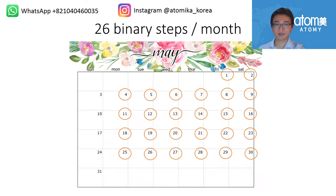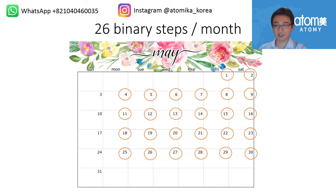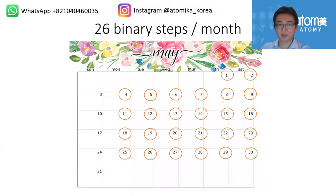You can match up to 26 binary steps per month on average — essentially one per day, except Sunday. Sunday is not counted as a separate day; purchases made on Sunday roll into Saturday or Monday. Also, when you make a purchase on the website, you can choose the date — today, yesterday, or tomorrow — for the convenience of matching your binary steps.